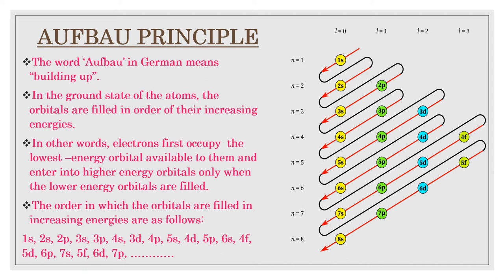The order in which the energies of orbitals increase, and hence the order in which they are filled, is as follows: 1s, 2s, 2p, 3s, 3p, 4s, 3d, and so on.